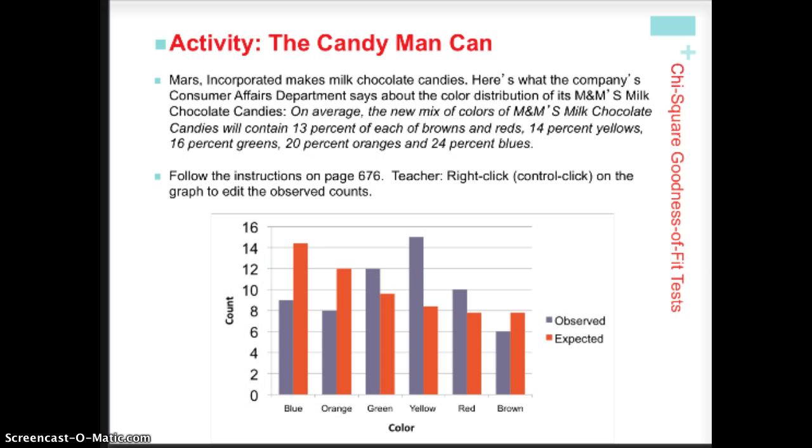So if we're looking at that distribution of colors of the Mars chocolate candies, the M&Ms that we're all familiar with, what we're going to be doing is we're going to be comparing what we observe in our sample with what we expect to get in a perfect world if the sample ended up having the exact distribution of colors that the company says it does in their claim.